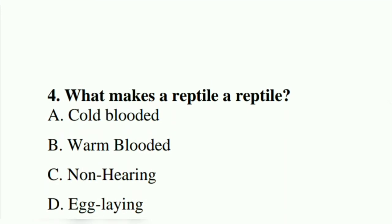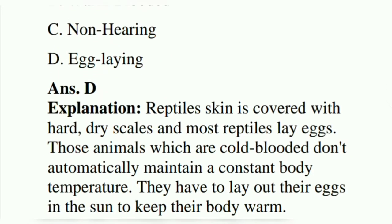Fourth question: what makes reptiles a reptile? Option A: cold-blooded. Option B: warm-blooded. Option C: non-hearing. Option D: egg-laying. The answer is D, egg-laying. Reptile skin is covered with hard dry scales and most reptiles lay eggs. Animals which are cold-blooded do not automatically maintain a constant body temperature. They have to lay out in the sun to keep their body warm.